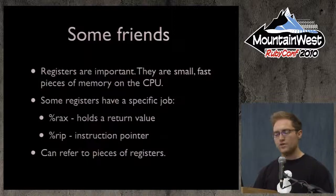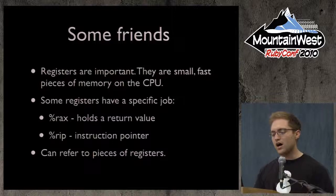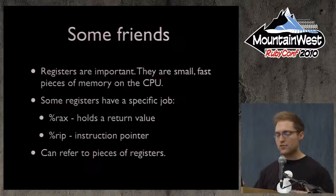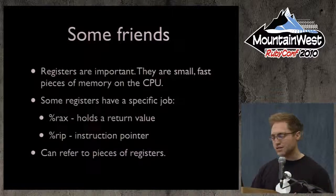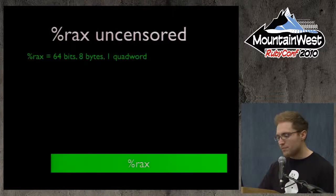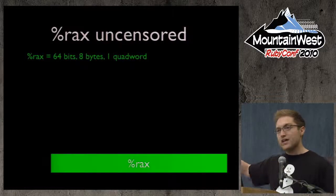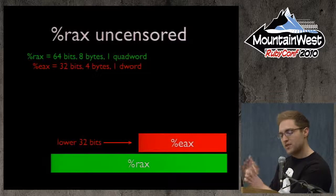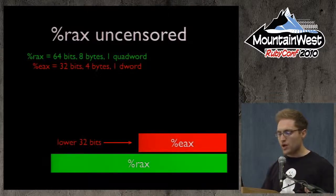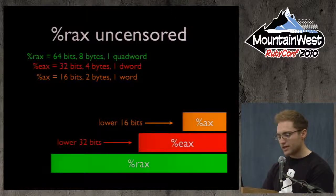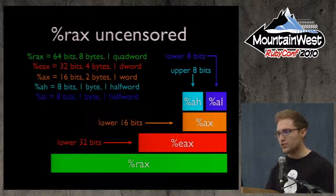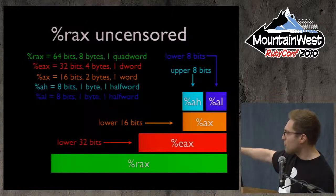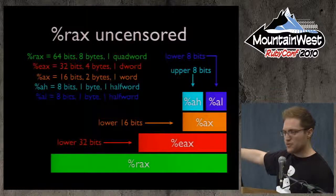We need to meet some new friends. Registers are small, fast pieces of memory that live on a CPU. Some registers have specific jobs: RAX holds a return value from a function, and RIP is the instruction pointer, keeping track of which instruction you're executing. You can also refer to registers in pieces — RAX is the full 64-bit register (8 bytes, one quad word), EAX is the lower 32 bits (4 bytes, one double word), AX is the lower 16 bits, and AX splits into upper and lower 8-bit halves. This shows the layering from 16-bit to 32-bit to 64-bit CPUs — they just kept gluing stuff onto the side.